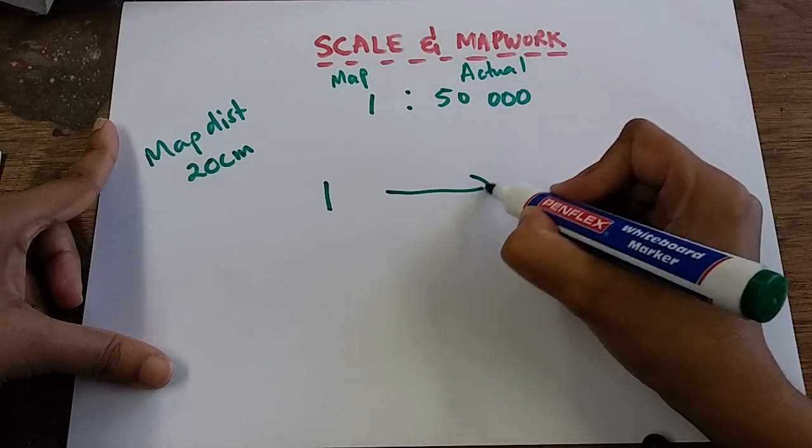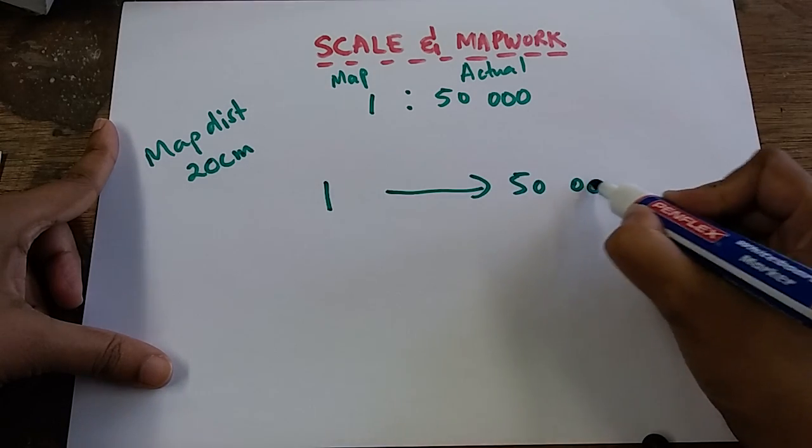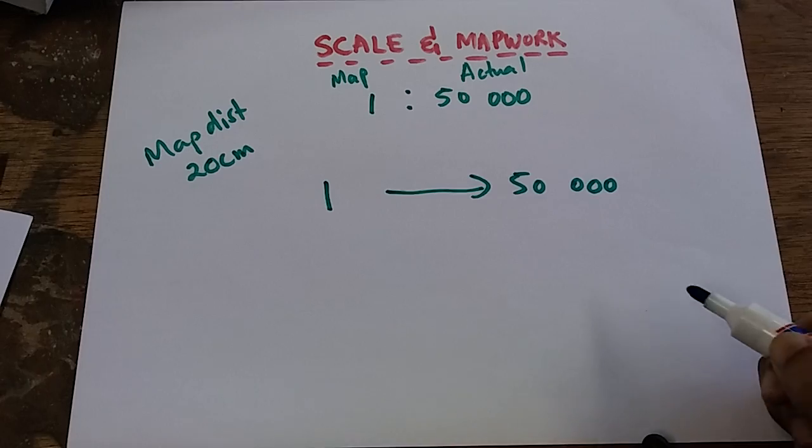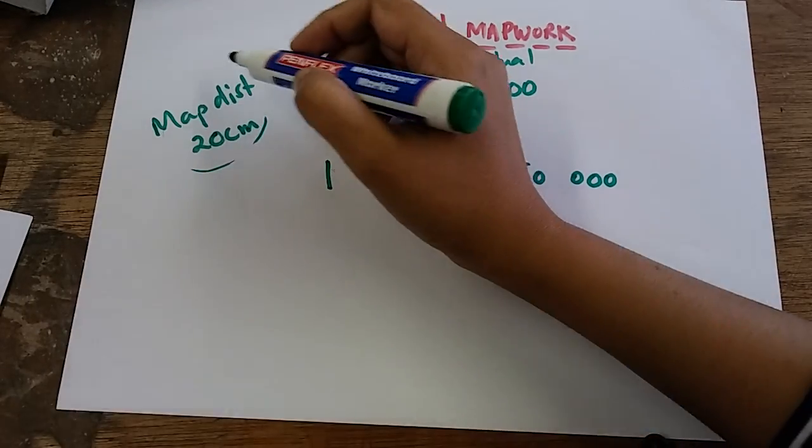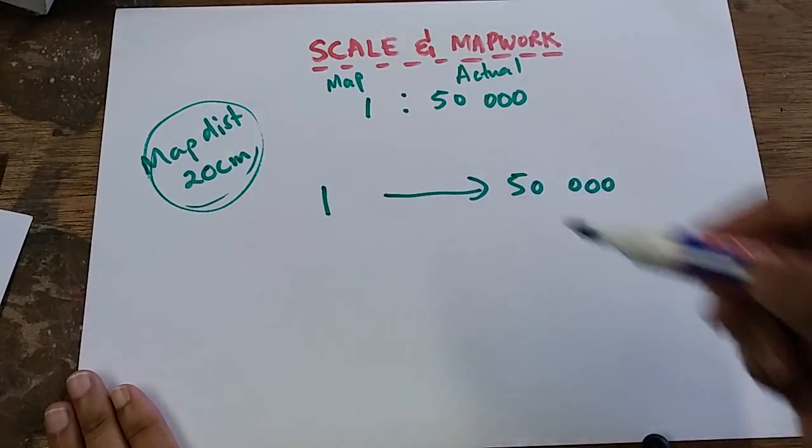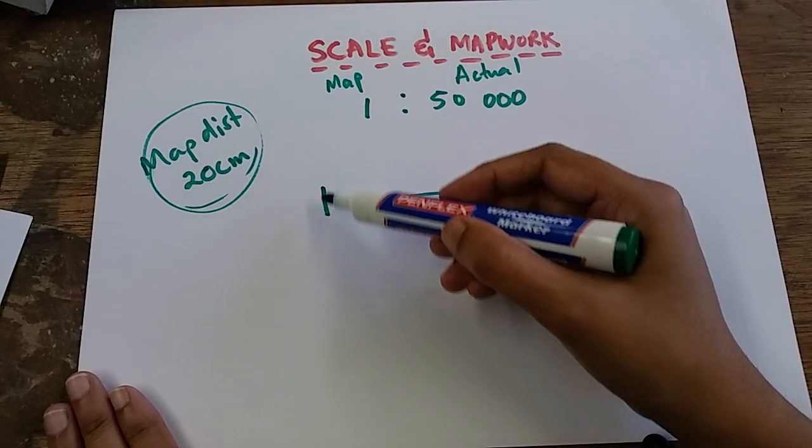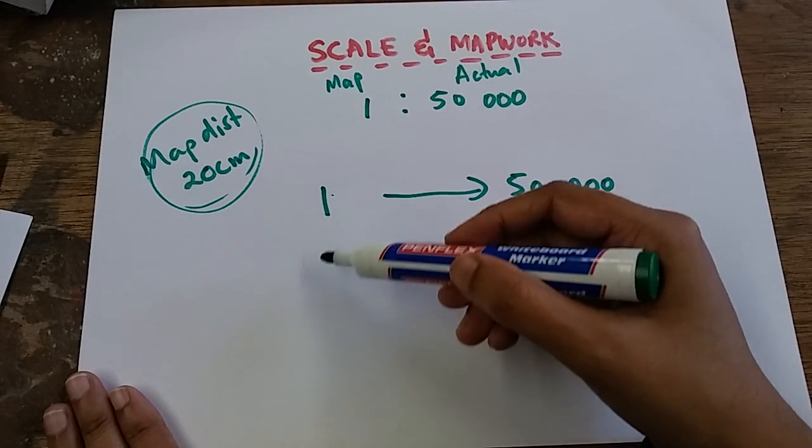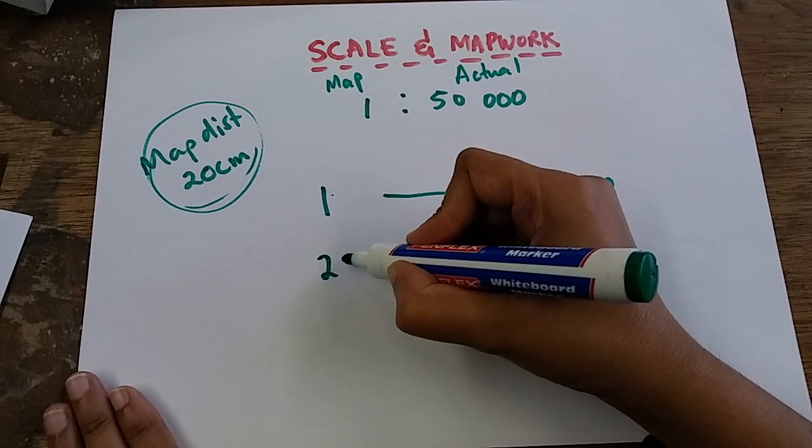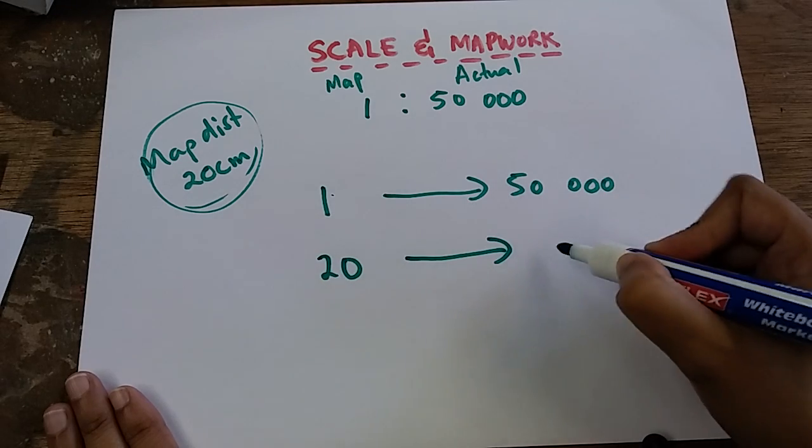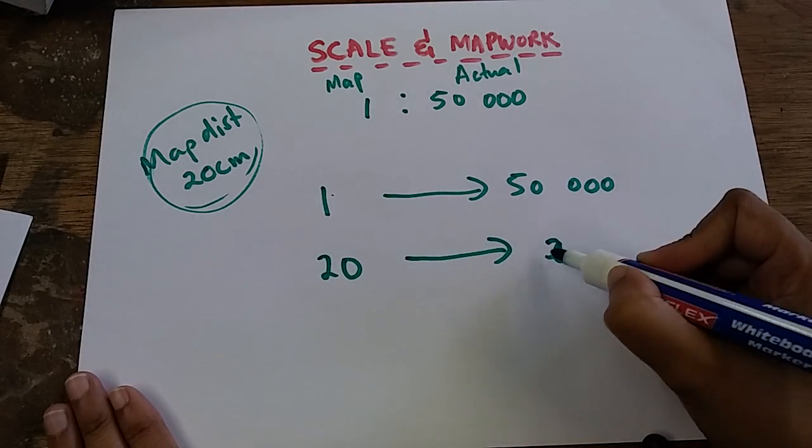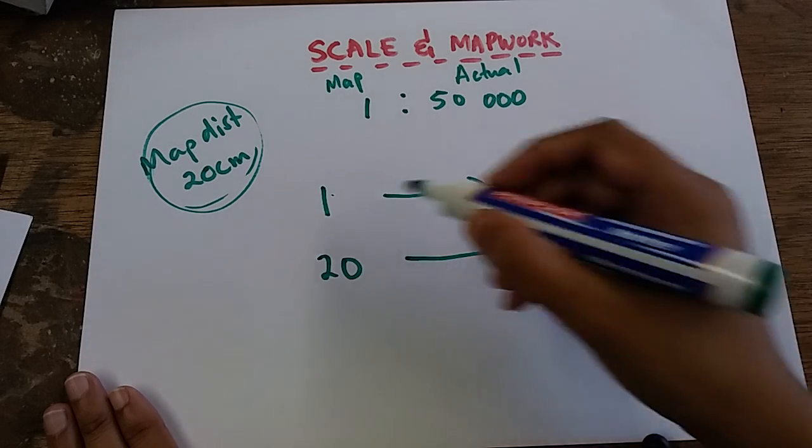Step two: from the question, substitute. So 1 represents map, so I'm going to substitute map below map, so the 20 goes below 1. On this side, this is my unknown, so that's X.